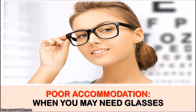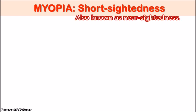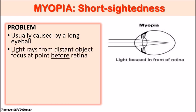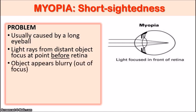So what happens when accommodation isn't quite working for you and you may have to get glasses? Let's look at the first condition: myopia, or short-sightedness. Usually the problem with short-sightedness is that the person has a long eyeball. And because the eyeball is longer, the light rays coming from distant objects focus at a point before the retina. In a normal eye, light rays will focus on the retina, but with a myopic person's eye, the light rays focus before the retina, so objects appear blurry and out of focus.